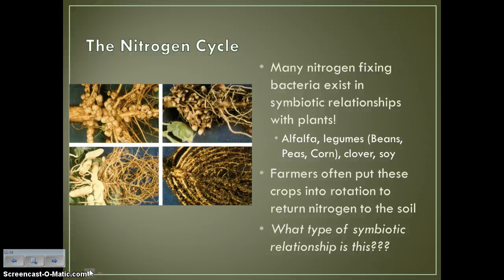What type of relationship is that between the nitrogen-fixing bacteria and these different plants? Remember your choices are parasitism, commensalism, or mutualism. The bacteria receive nutrients from the plants — the plants take in nutrients through their roots and make glucose during photosynthesis. And the plant itself is getting that fixed nitrogen basically for free. So they're helping each other out, which means this is mutualism, of course.